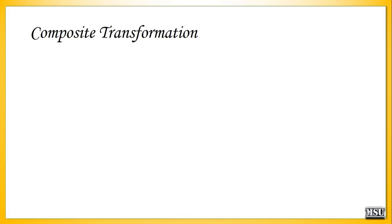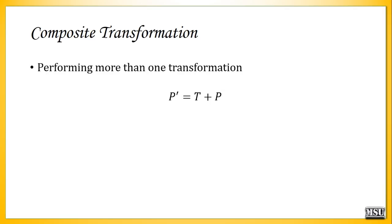We already know the formulas to perform transformations. To perform a translation, we know the formula p' = t + p — we use a translation vector and the original point to calculate the new point. To perform rotation, we need a rotation matrix; to perform scaling, we need a scaling matrix. By seeing these formulas, we can say that translation is addition, while rotation and scaling are multiplication.